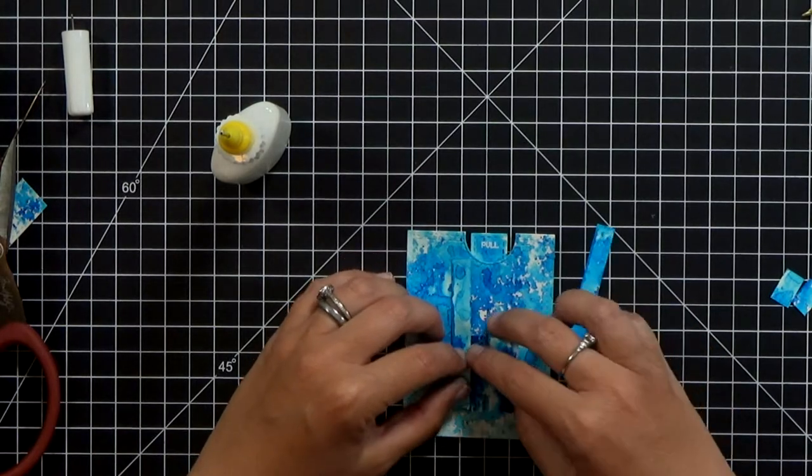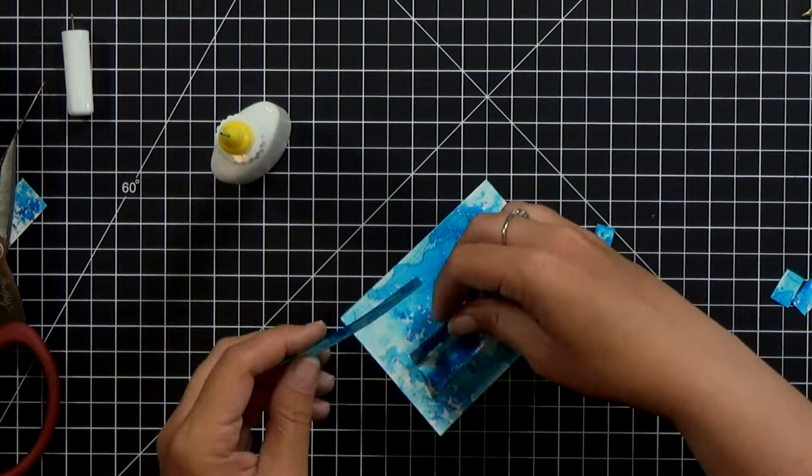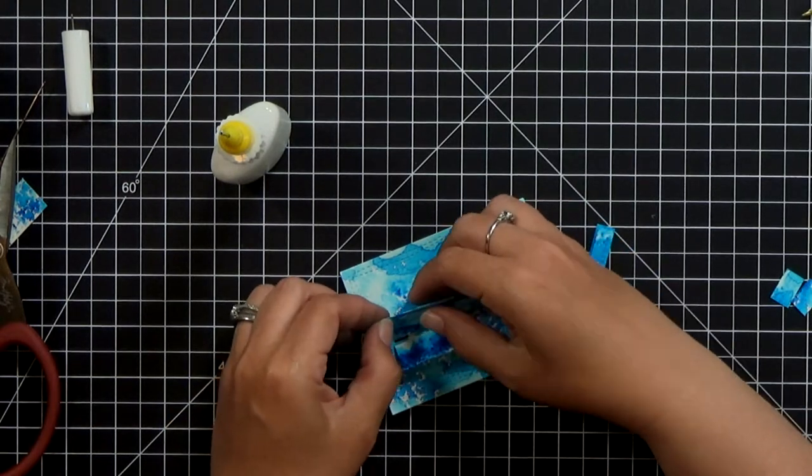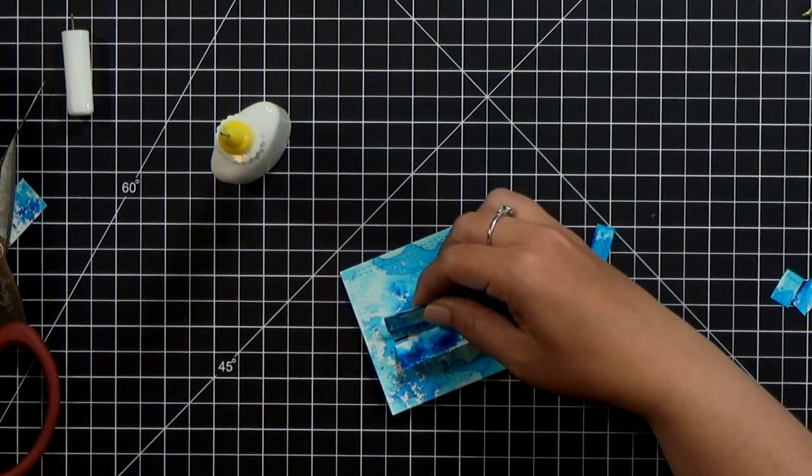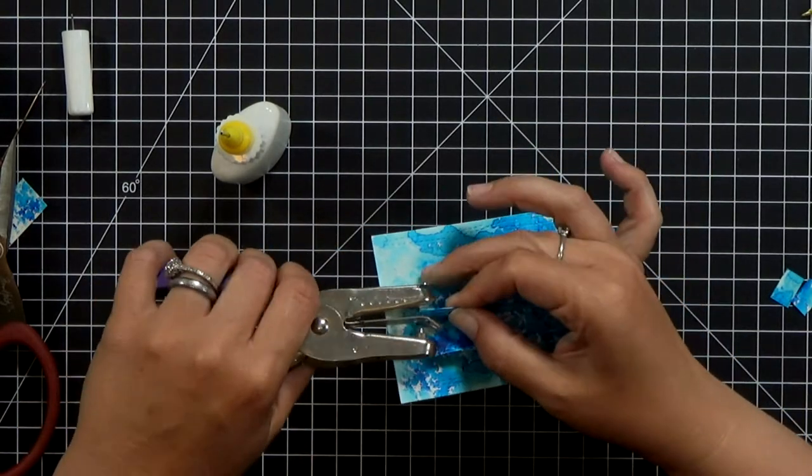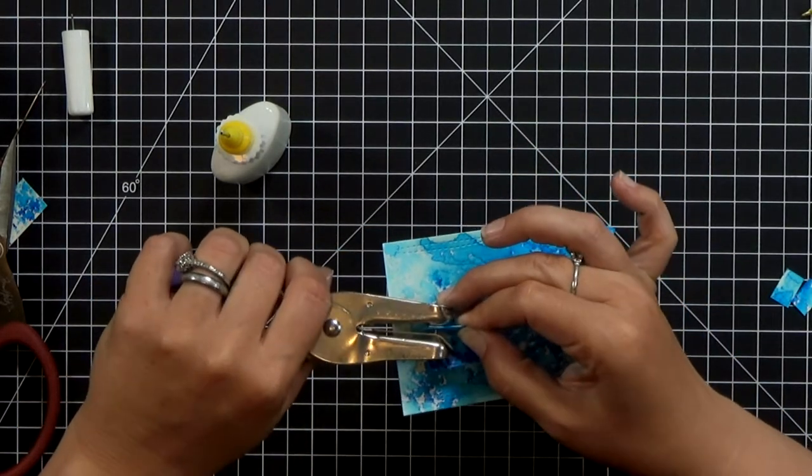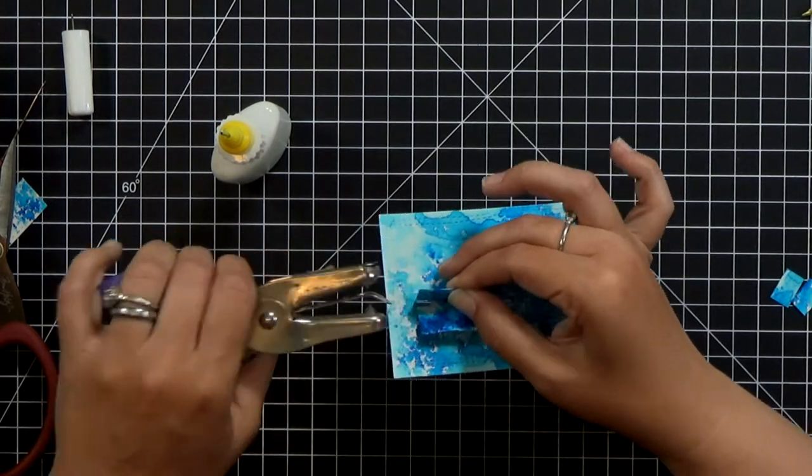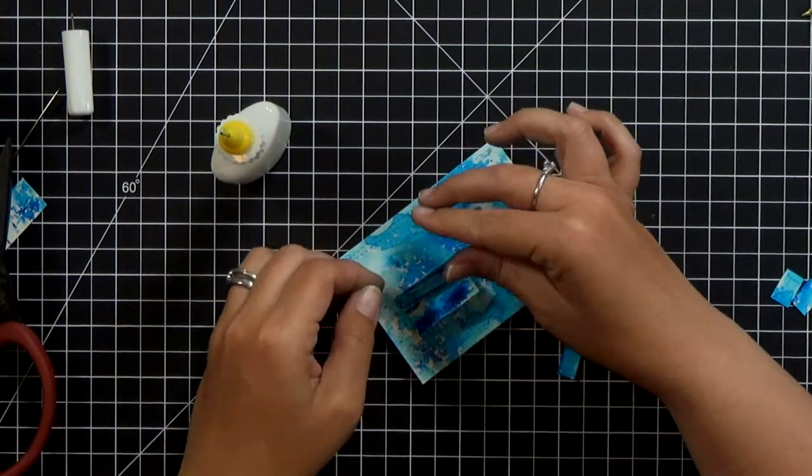I'm going to take an eighth inch hole punch and I'm just going to line the strip up with the bottom outer edge of those tabs that we just glued on and then I'll grab mini brads and I will connect them.